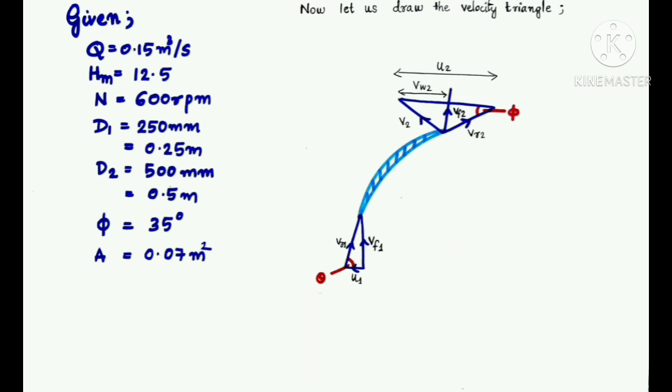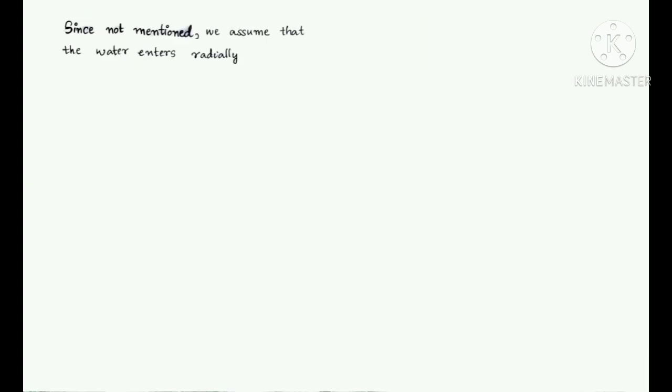Now, let us draw the velocity triangles at inlet and outlet of the pump. Vw1, Vw2, Vf1 and Vf2 are the horizontal and vertical components of V1 and V2 respectively. Since not mentioned in the question, we assume that the water enters radially.